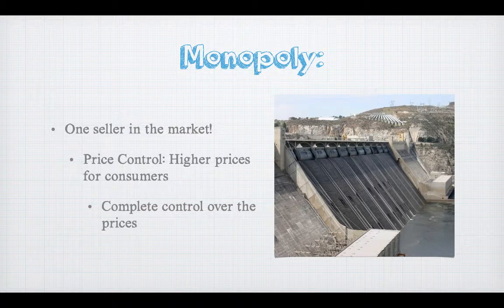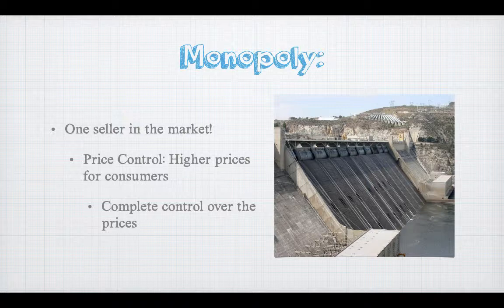The last structure is monopoly, which many people know from the board game — the goal is to own as many properties as possible to put competitors out of business. In economics, a monopoly means there is one seller in the market, which means high prices for consumers. Think about how much higher the rent gets with four houses or a hotel in Monopoly. Monopolies have complete control over their prices with no competition, so they don't care if they raise prices because customers have nowhere else to go.